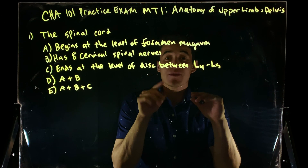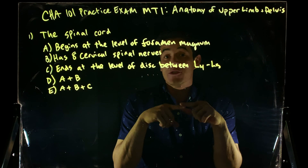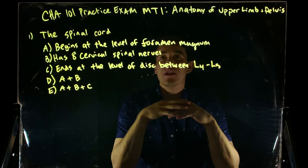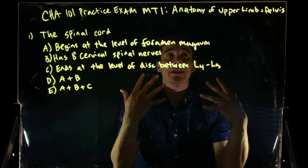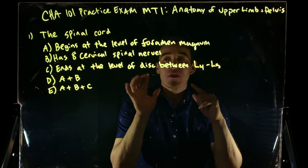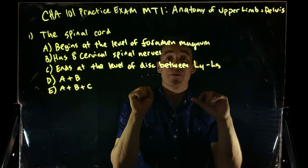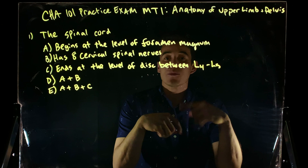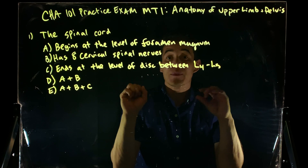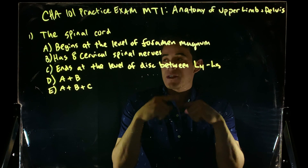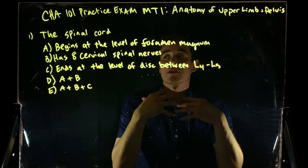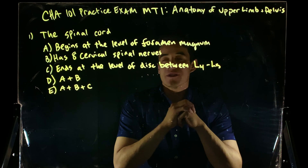Today we're going to be going through practice problems for your midterm coming up, your first midterm. This is for Bio 101, but this applies to anybody taking anatomy. We're going to be focusing on the upper limb, the pelvis, and perineum. I'm going to give you guys as many questions as possible and try to do it as quickly as we can, so my answers might not be in as much depth — I want to give you the questions, the answers, and a brief explanation.